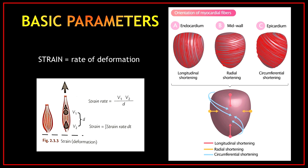Let's review some basic parameters. The left ventricular wall can be subdivided into several layers. The ventricular wall consists of an inner lining called the endocardium, a thick muscle layer called the myocardium, and an outer lining called the epicardium. Muscle fibers adjacent to the endocardium are longitudinally oriented, which results in longitudinal shortening as you can see in figure A.